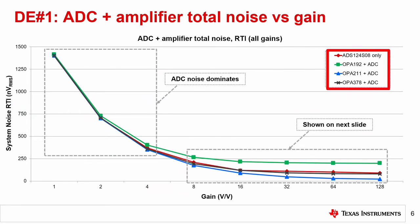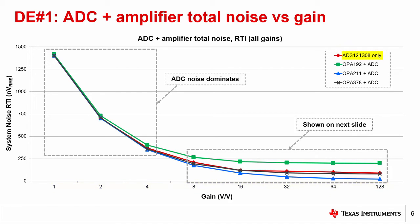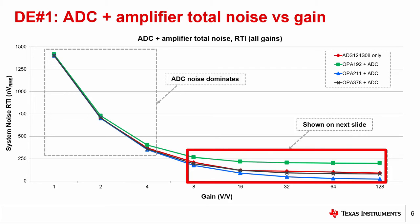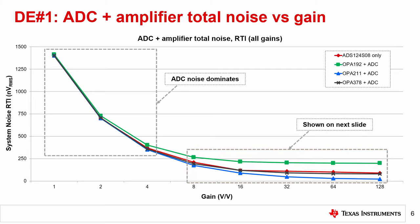Shown here on the left are four plots representing each signal chain's voltage noise versus gain. The binary gains on the x-axis reflect the available options on the ADS124S08. The red line represents the ADS124S08 noise by itself, while the other three lines represent each discrete amplifier followed by the ADS124S08 with the ADC gain set to 1 V/V. Note that each system's noise is fairly similar for gains of up to 4 V/V, since the ADC noise is still dominating. However, at a gain of 8 and beyond, these plots start to diverge. Adding the OPA192 to the ADS124S08 actually increases the noise floor compared to the ADC by itself, so this is not the best amplifier to pair with this specific ADC if your goal is optimal noise performance.